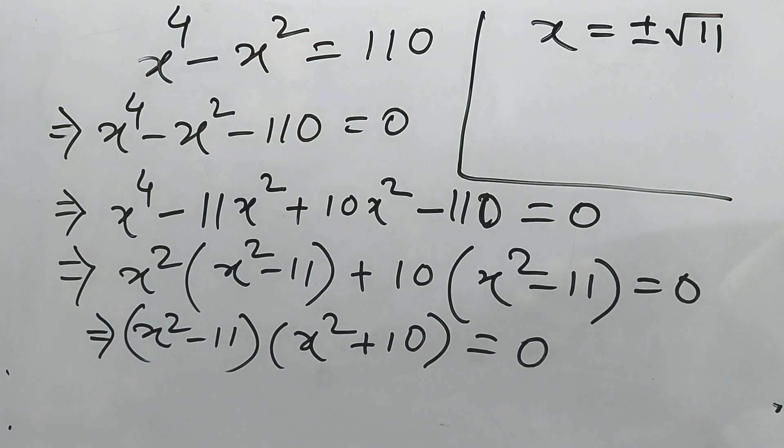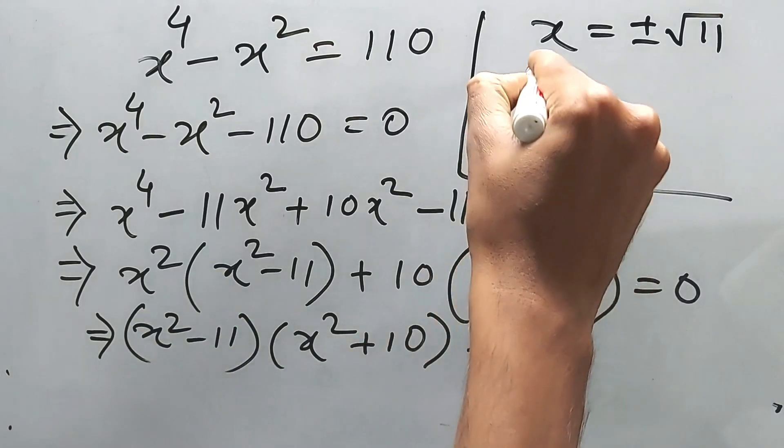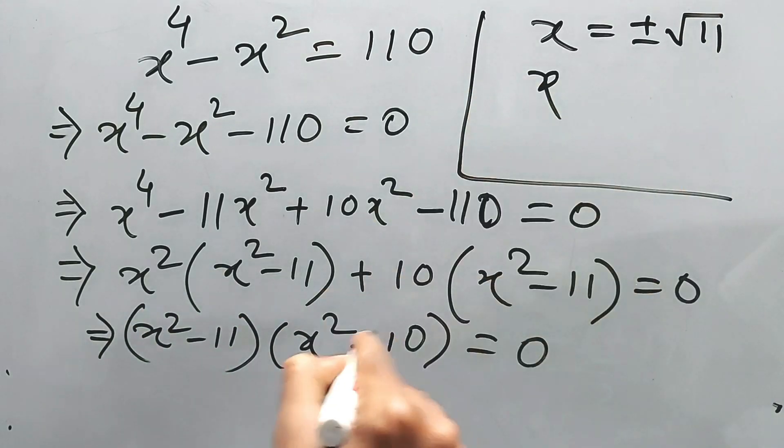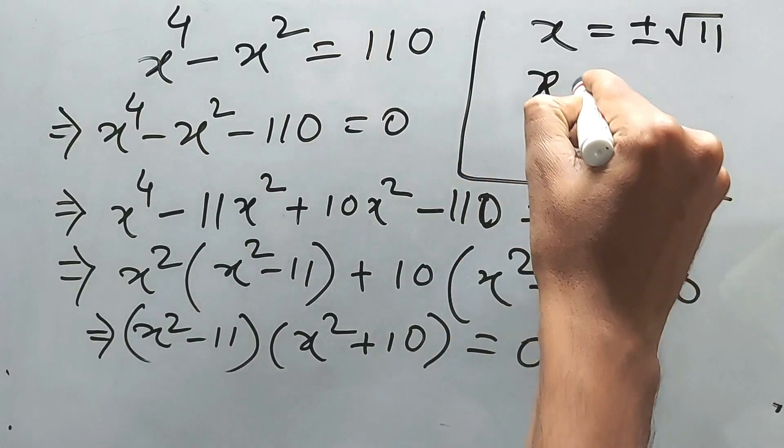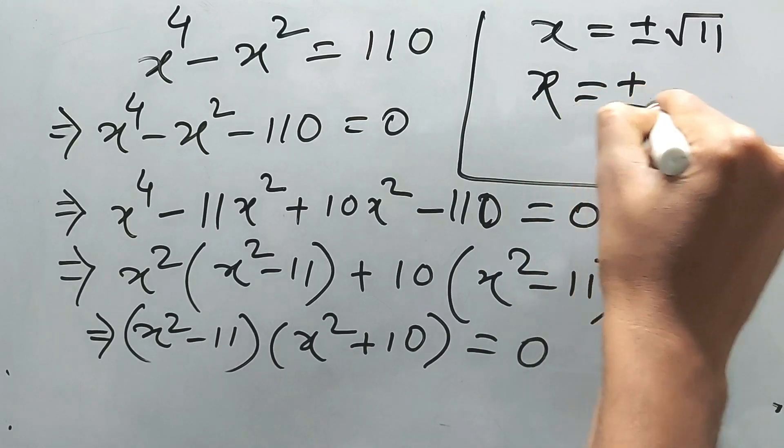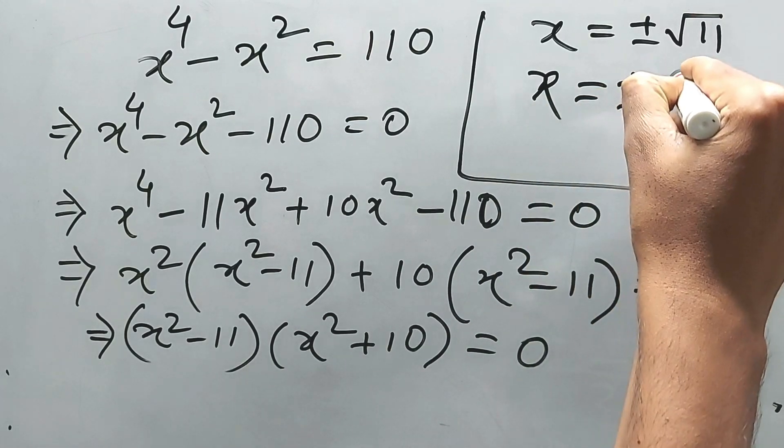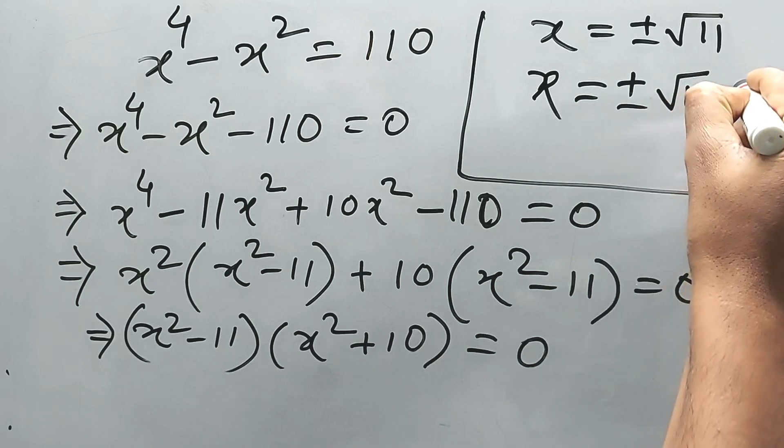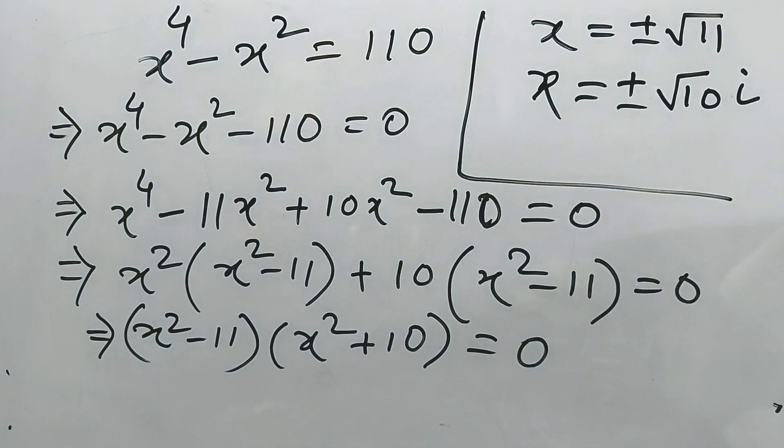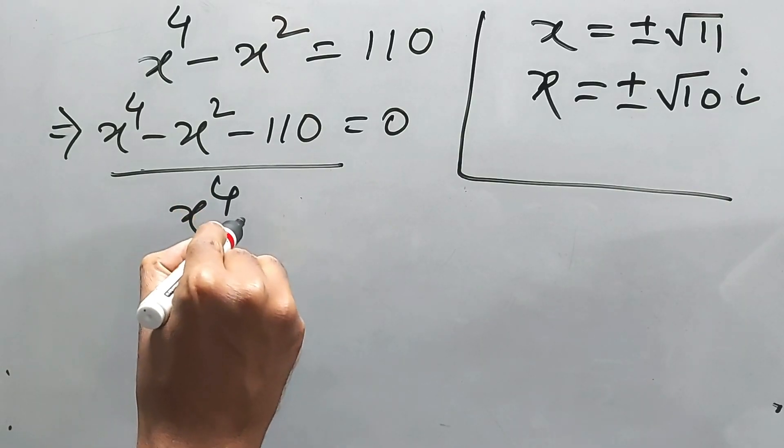If x squared is equal to minus 10, then x is equal to plus minus square root of 10i. Square root of minus 1 is i, we know this, right? Bonus time, x to the power 4...